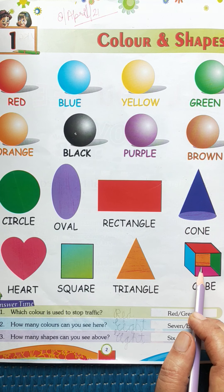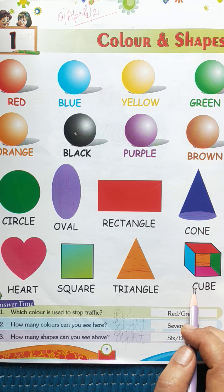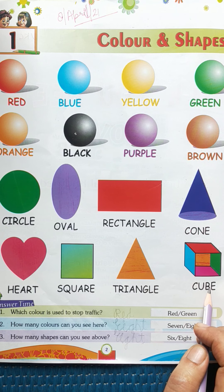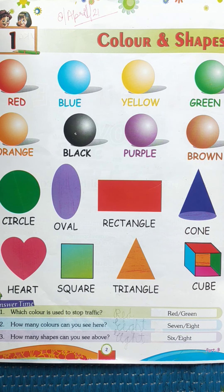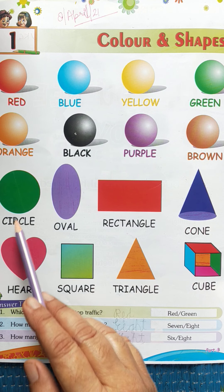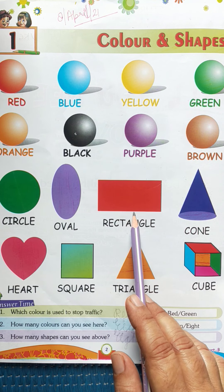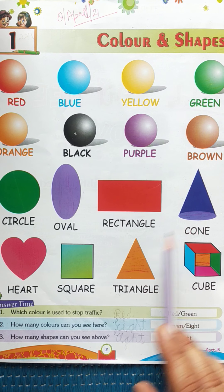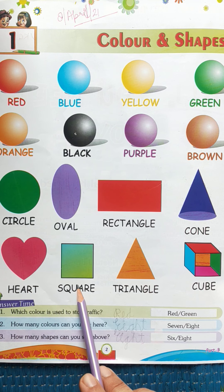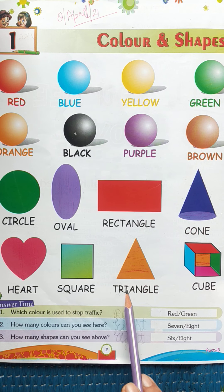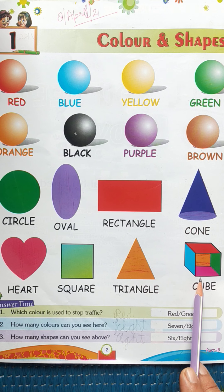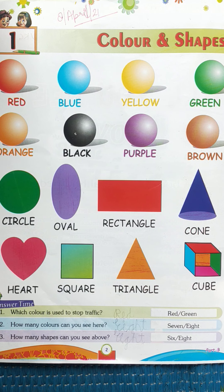This is shape cube. Spelling is C-U-B-E, cube. Let's revise: circle, oval, rectangle, cone, heart, square, triangle, and cube. These are the shape names.